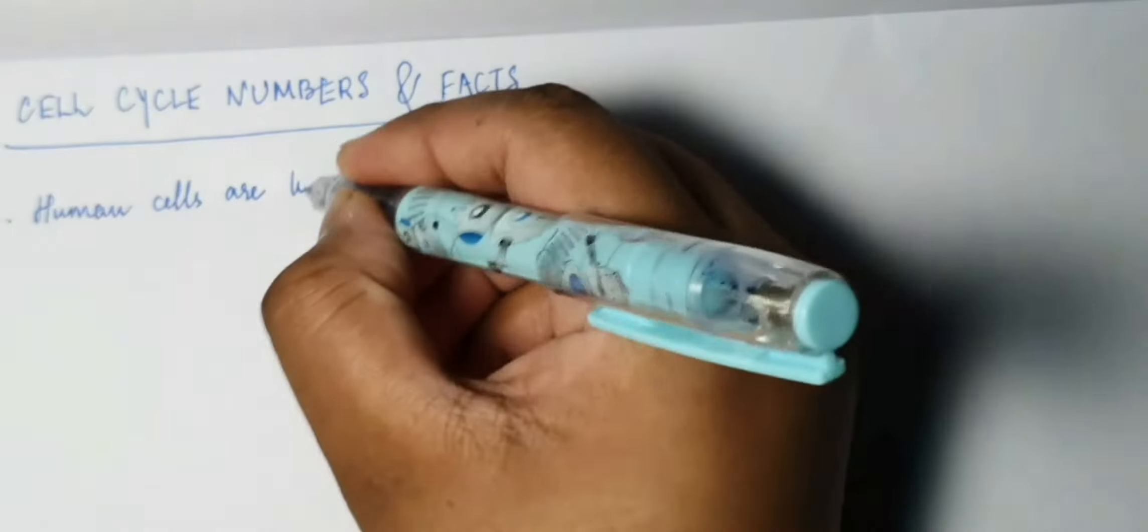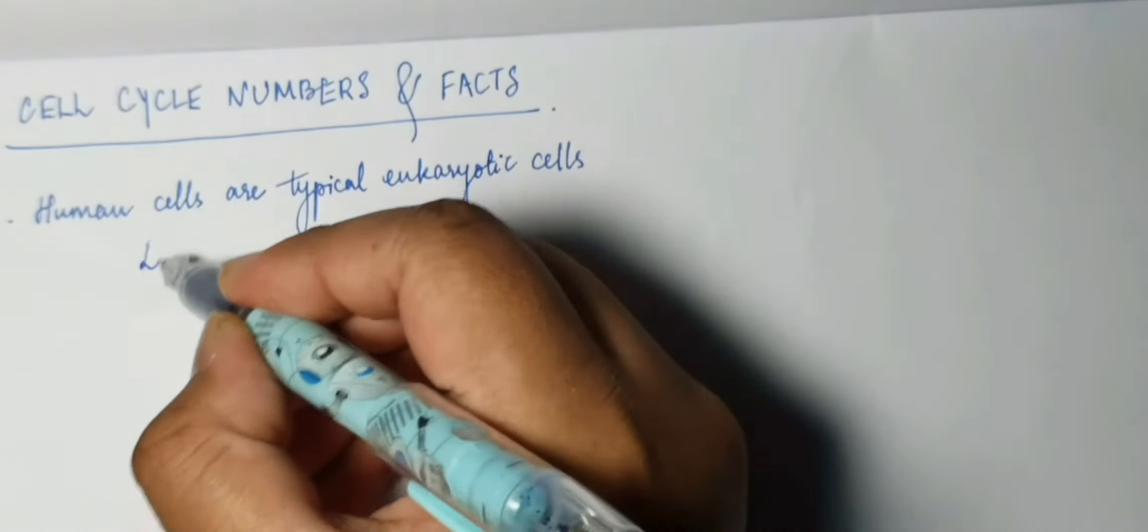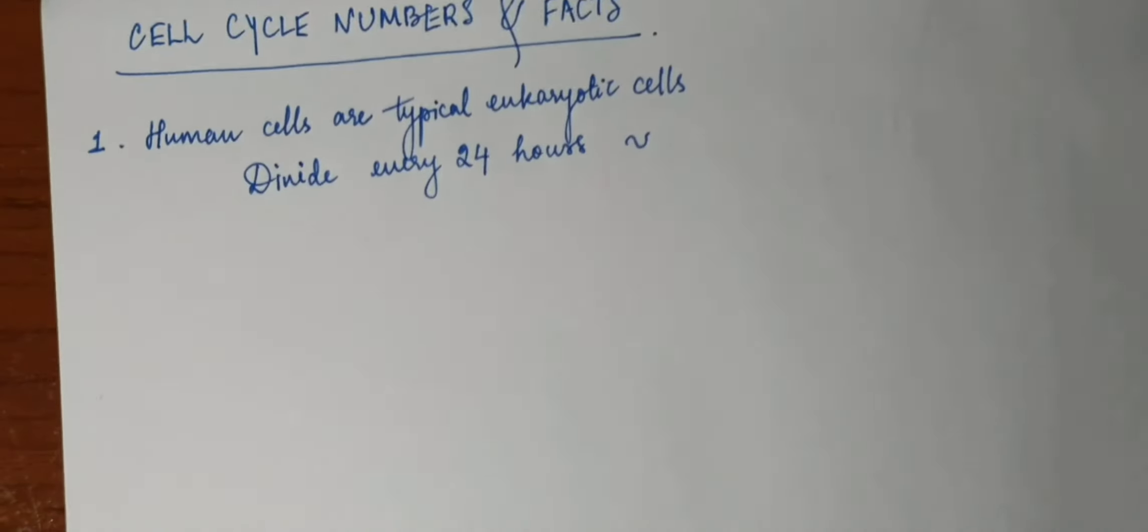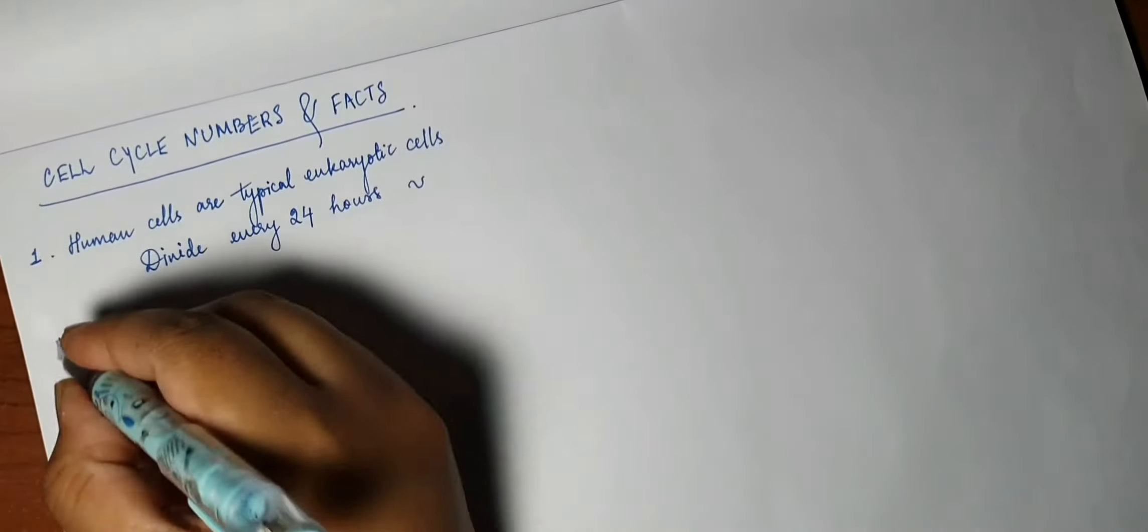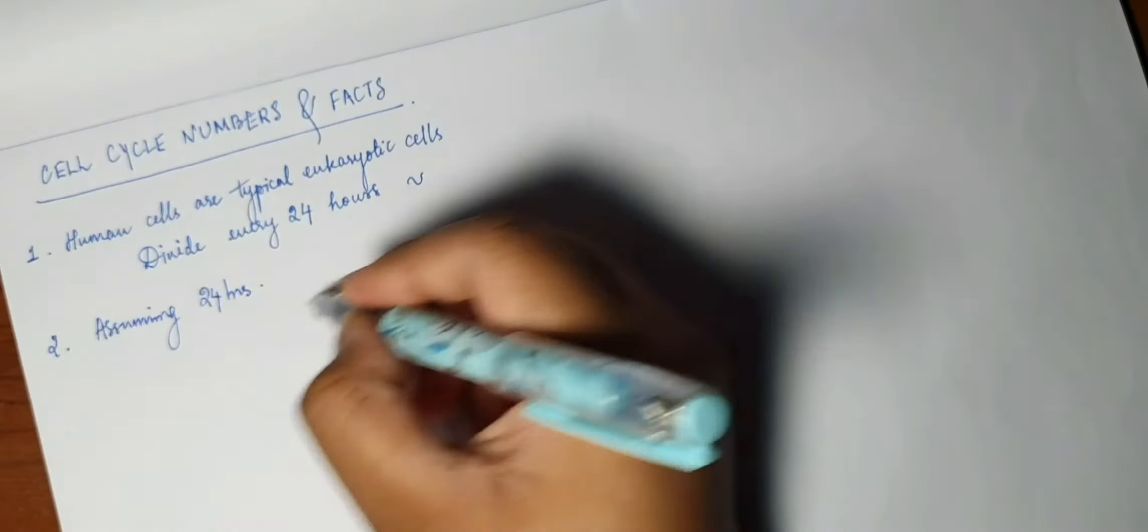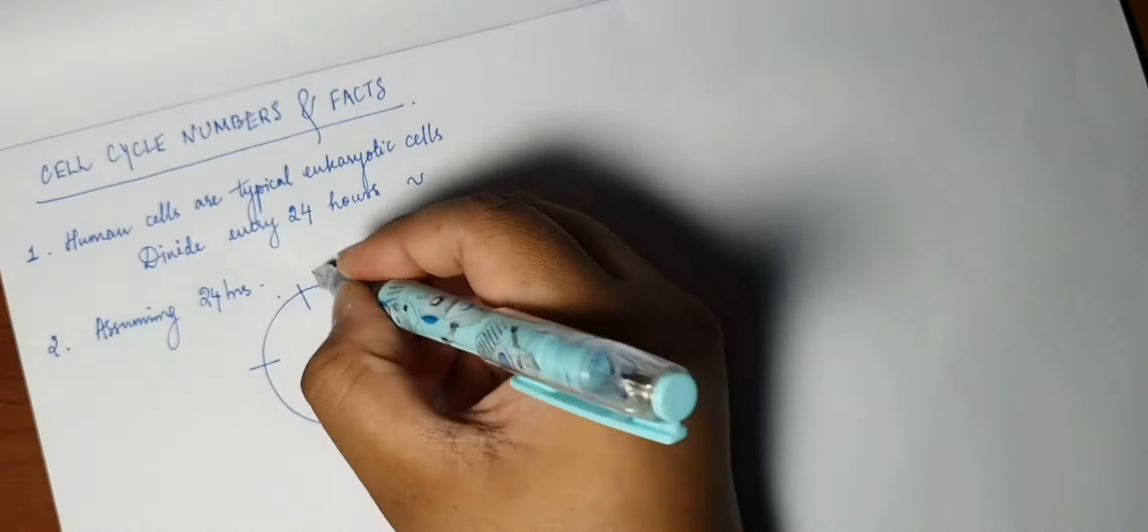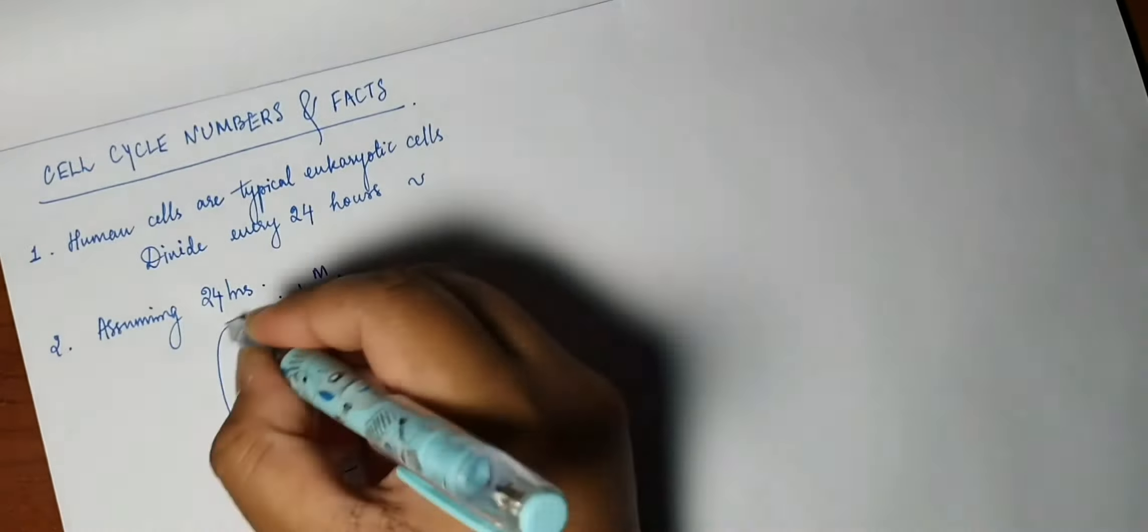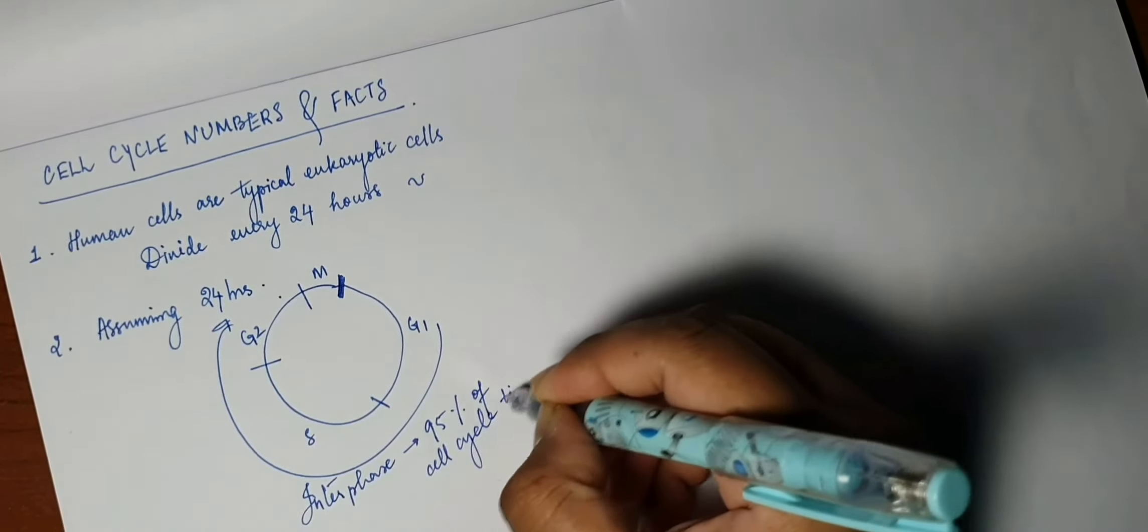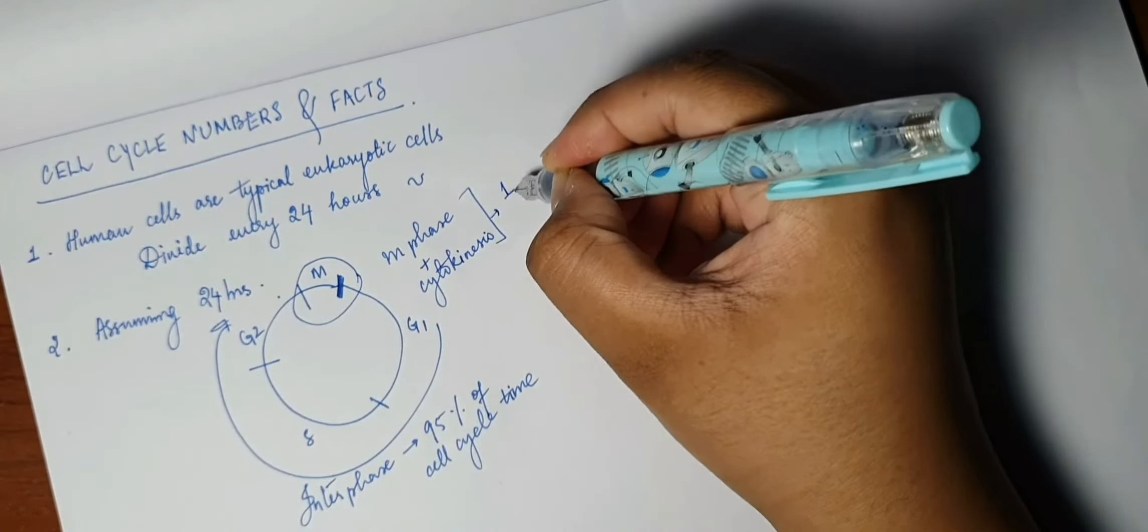Now there are some important numbers and facts we need to know about the cell cycle. The human cells are typical eukaryotic cells. They divide every 24 hours, and it's an approximation. The number may vary according to the different types of cells. So assuming that 24 hours is the entire cell cycle, when we divide it based on the phases, interphase takes up about 95 percent of the cell cycle time.